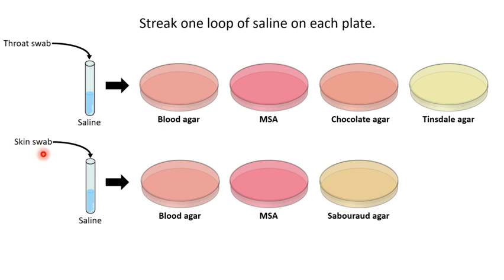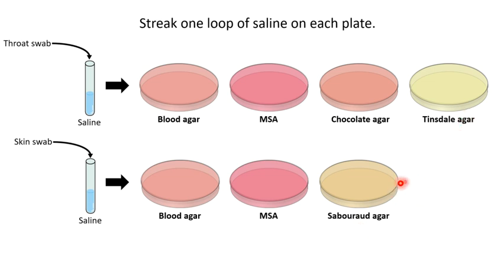Likewise, the skin swab will be taken and placed into a tube of sterile saline, then plated using a loop onto a blood agar plate, an MSA plate, and a Sabouraud agar plate. As you can see, we have different plates for the two different swabs. We're more likely to find fungus on the surface of the skin, so we use the Sabouraud agar plate there. We're more likely to find Neisseria and Corynebacterium species in the throat, so we use the chocolate agar plate and Tinsdale agar plate for that swab.